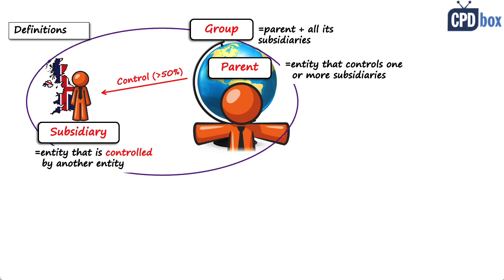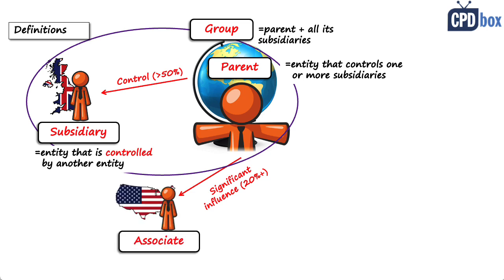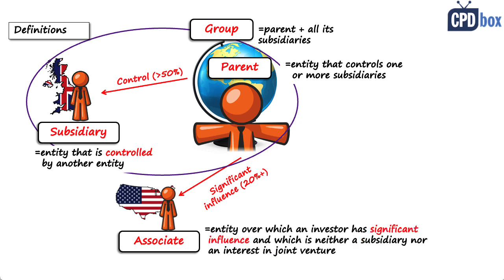An investor can purchase less than 50% — for example, more than 20% — and be able to exercise significant influence in the investment. That investment is then an associate, not a subsidiary. IAS 28 defines an associate as an entity over which an investor has significant influence, and which is neither a subsidiary nor an interest in a joint venture.